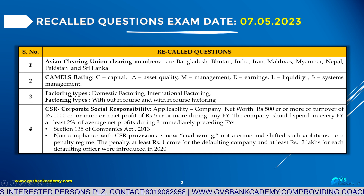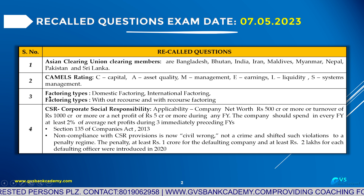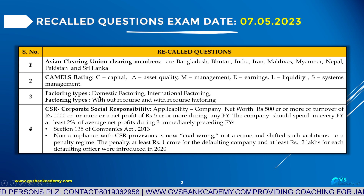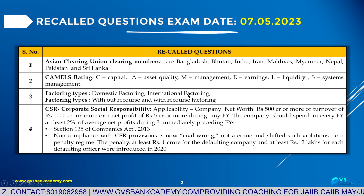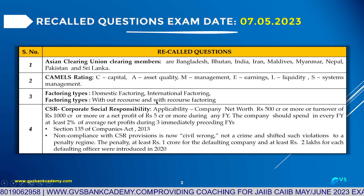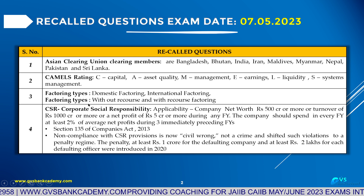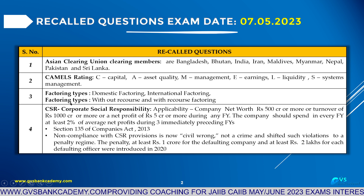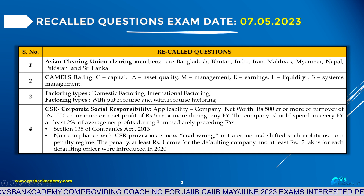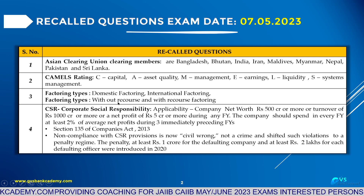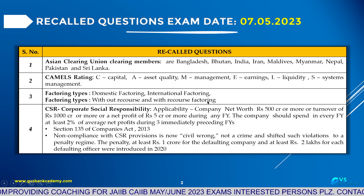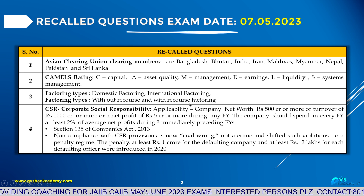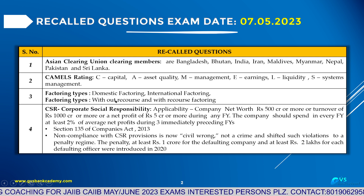Number three: Factoring types. NBFC factoring has two types. First, domestic — discounting of domestic receivables; second, international — discounting of international receivables. Another classification is without recourse factoring and with recourse factoring. Without recourse: the NBFC factor takes the responsibility for the default of the receivables. With recourse: the default responsibility is taken by the selling company of the receivables.